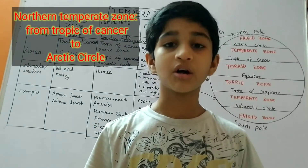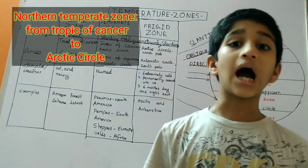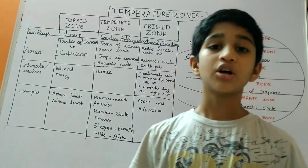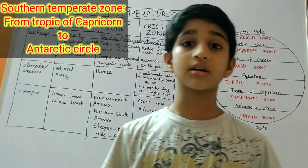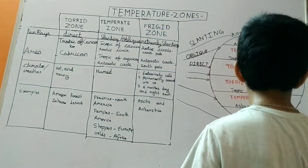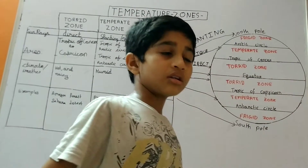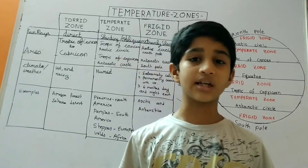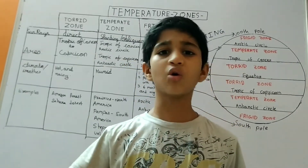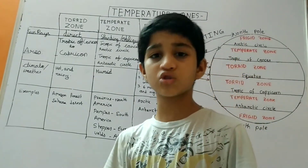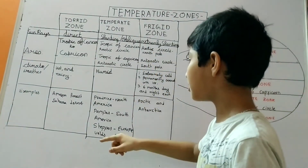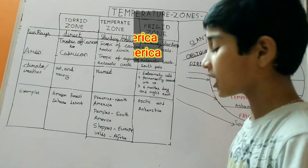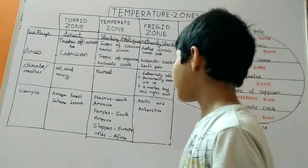The north temperate zone extends from the Tropic of Cancer to the Arctic Circle. The weather here is humid. When you go to green lands, it will be very humid. It will be moderate — less rain, less sunlight, and no snow. Examples include the Prairies in North America, Pampas in South America, Steppes in Europe, and East Africa.